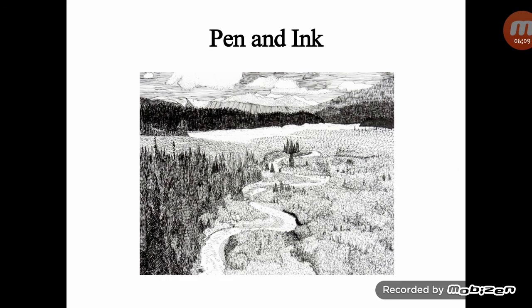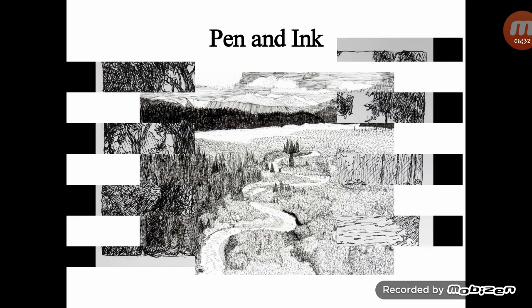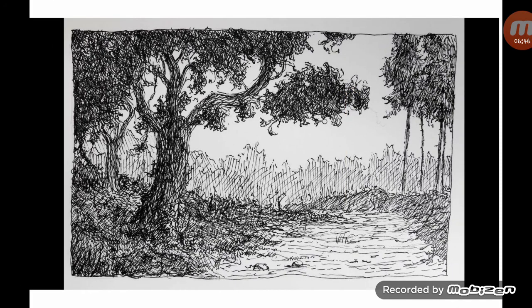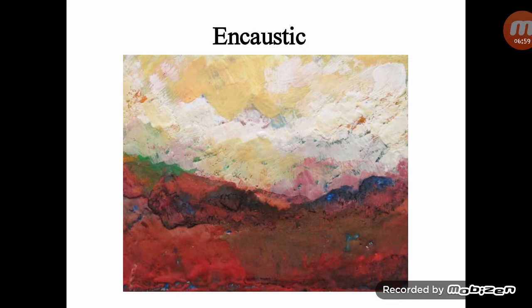Moving to liquid media — pen and ink uses pens and ink to create uninterrupted lines. A major variable in ink drawings is the thickness or thinness of lines. Here is an example of a landscape in pen and ink.